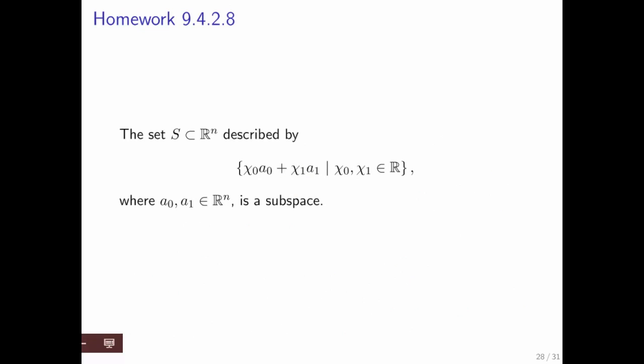Here's one that's a little bit more complex. What does this say? Given two vectors a0 and a1, look at the set of all vectors that are linear combinations of those two vectors. And it turns out that that's a subspace. You can prove this in a very similar way as the last one. I'll just let you look at the proof that came with the homework.